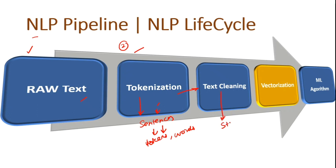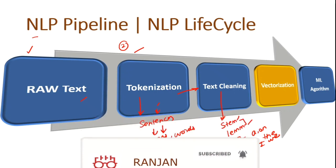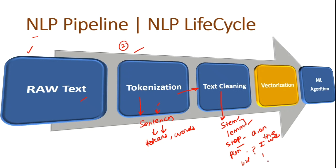After tokenization, we perform text cleaning. In text cleaning there are several processes: we perform stemming or lemmatization — these are essentially the same thing, so we do one or the other. We remove stop words, which are words like 'a', 'the', 'I', 'we'. We remove punctuations like commas, full stops, and question marks. We convert uppercase into lowercase, remove URLs, remove apostrophes, split attached words, standardize words — for example removing extra letters — and decode data into a standard format.